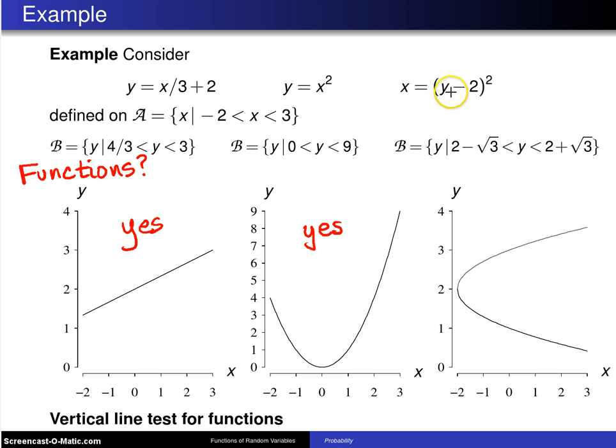And the third case, x equals y minus 2 squared, that is not a function. Now, why is this relationship not a function?